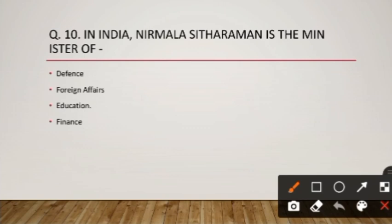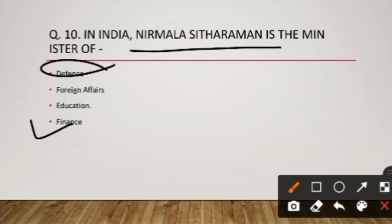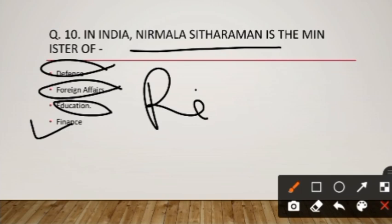Question number ten: Nirmala Sitharaman is the minister of what? Nirmala Sitharaman is the Finance Minister of India, so option D is the right answer. Other options: India's Defense Minister is Rajnath Singh, Foreign Minister is S. Jaishankar, and Education Minister is Dharmendra Pradhan. As a bonus question — write in the comments who is the Railways Minister of India.